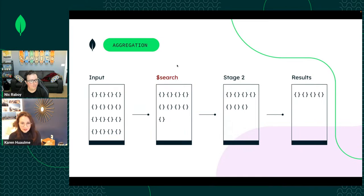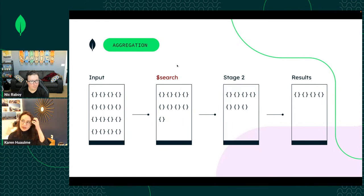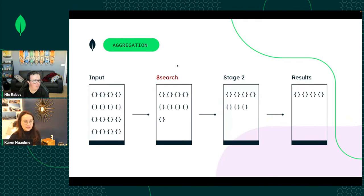Make sure you're using dollar search as the first stage, make sure you have your index created, and it should work regardless of what version of Compass you're on. Atlas Search came out roughly three or four years ago — I believe it requires at least MongoDB version 4.4 on the cluster.